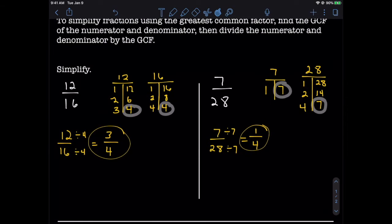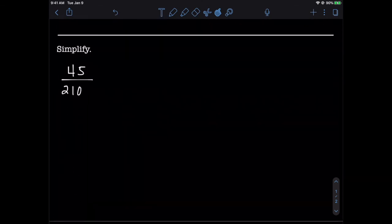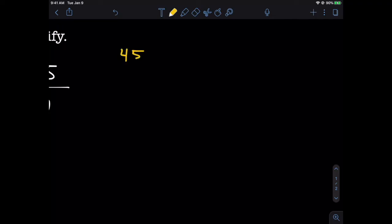Alright, let's try one that's a lot more involved, shall we? In our last example here, we are asked to simplify 45 over 210. Both bigger numbers with a lot more factors, but hey, we could do this. Let's give it a shot here. Set up the factor table for 45. 45 divided by 1 is 45.